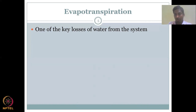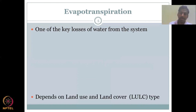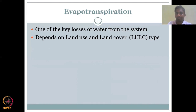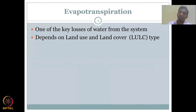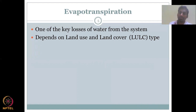Evapotranspiration is a loss, though the transpiration part is needed for plant growth. It depends mostly on land use and land cover, which we call LULC — a very common term. Your evapotranspiration depends on the land use and land cover type. Land cover could be agriculture, forest, barren, etc., and land use is how you use the land — for example, a road on top or a management practice for agriculture. All these impact evapotranspiration.